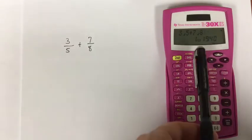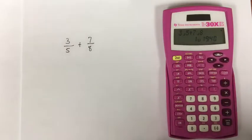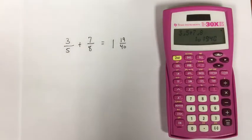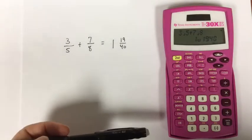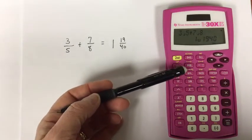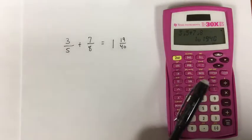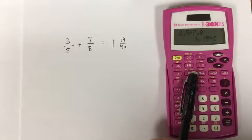Notice that the calculator has given me the result in a mixed number form. So, what you're seeing here is 1 and 19 40ths. Now, a lot of times we need our results in an improper fraction form. Notice that the second function of the fraction button looks like a mixed number being converted to an improper fraction and back again.